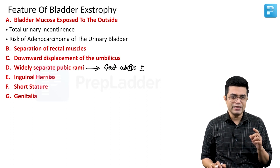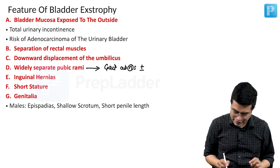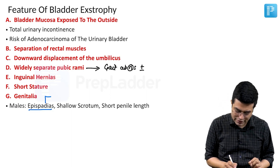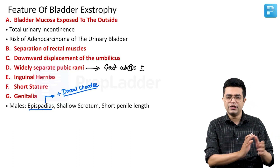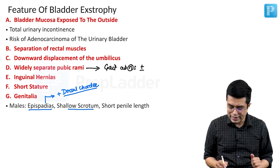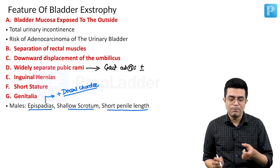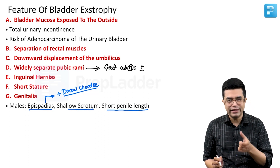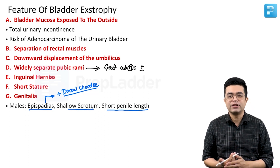In males, the genitalia abnormalities are more striking. Males will have epispadias — what we find in these patients is total epispadias, often associated with a dorsal chordee. Details of epispadias and what dorsal chordee is have been discussed in a separate video. There will also be a shallow scrotum and a short penile length — the penis length in these males is approximately half of what is expected for that age.